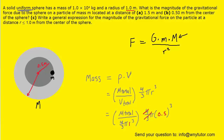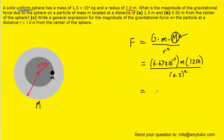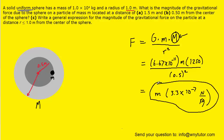When we plug in the total mass, which is 1 times 10 to the fourth, and multiply by 0.5 cubed, the mass of the solid gray portion of the sphere comes out to 1,250 kilograms. That's the mass we plug in for part B. When we compute that, we get lowercase m multiplied by approximately 3.3 times 10 to the minus 7th newtons per kilogram. If your question gave you a value for lowercase m, you could plug that in to get the overall force, but our final answer to part B is this expression.